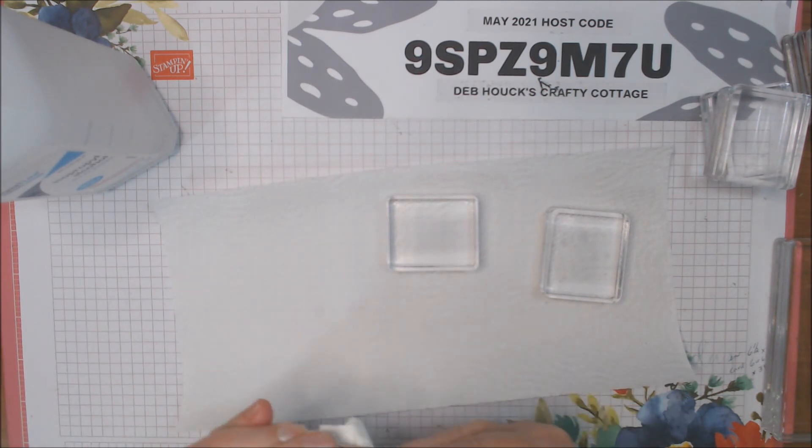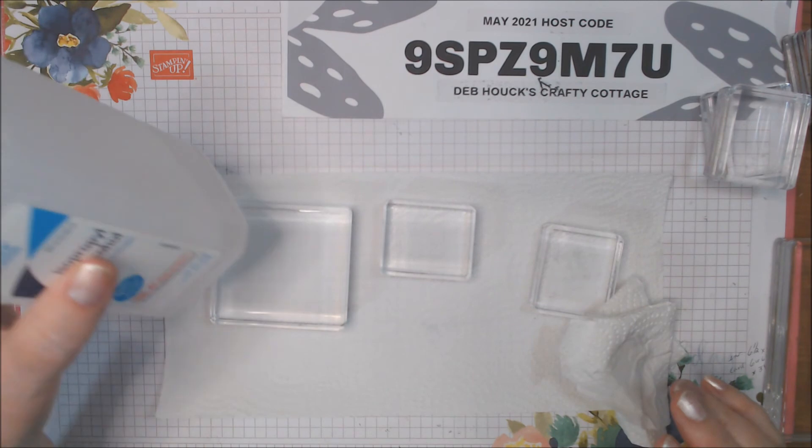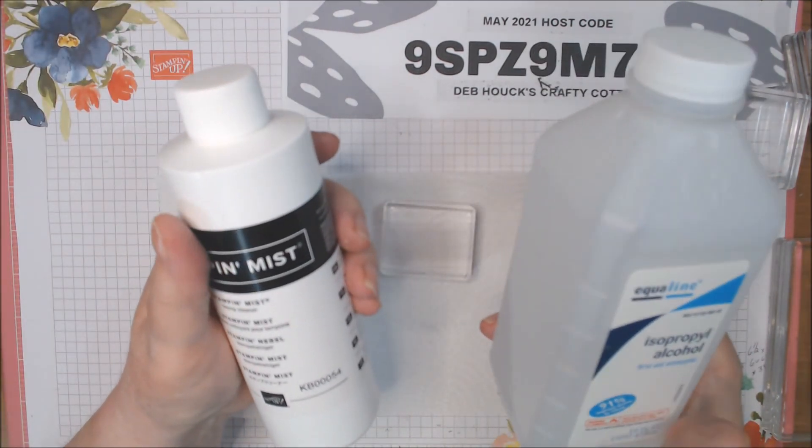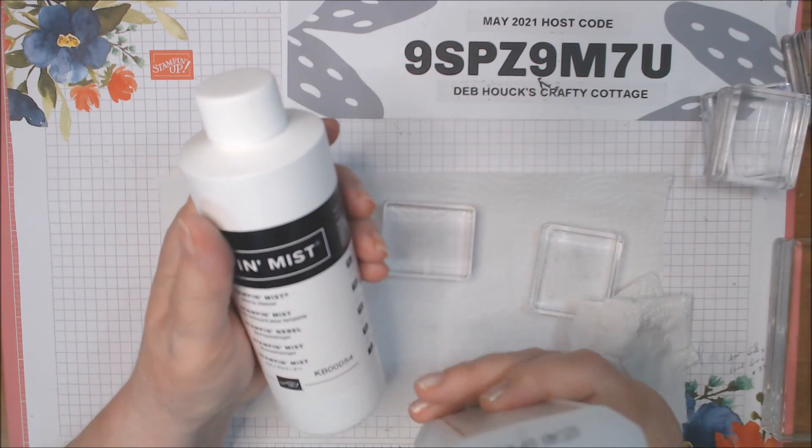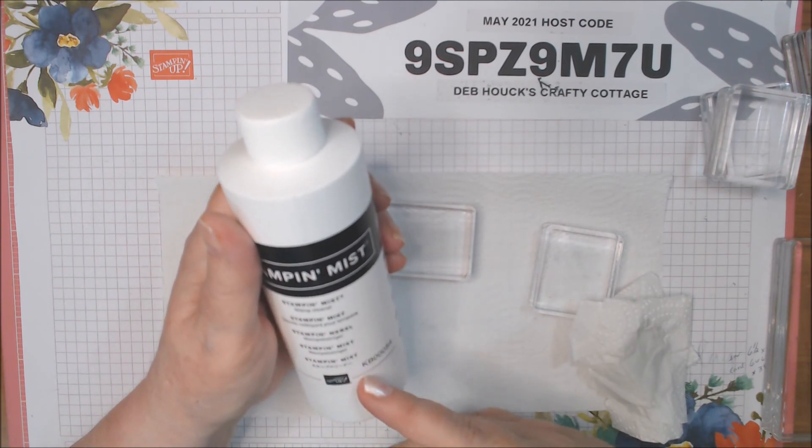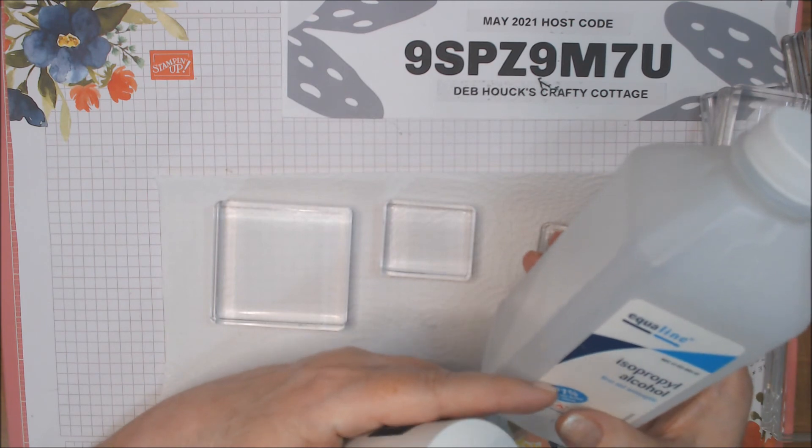So anyway, that is it, guys. For your regular inks, your dye-based inks, isopropyl alcohol—this is 91%, I'm sure 70% works fine too, I don't know, I have both actually. And you might want to reserve the 91% for your misters, and then you could use 70% on your blocks, and that would be fine.